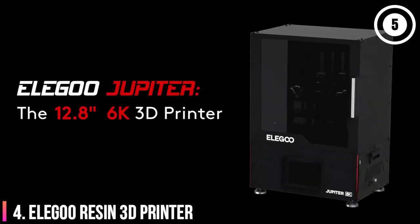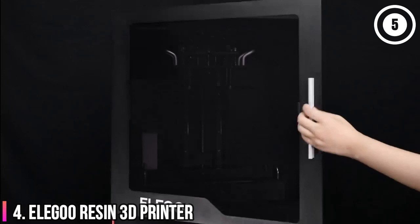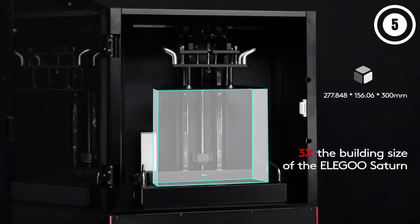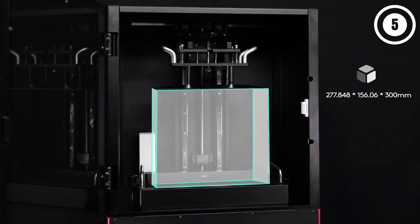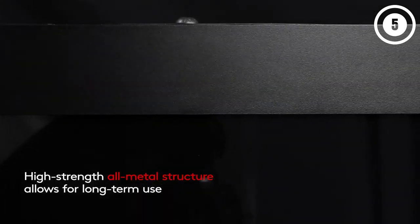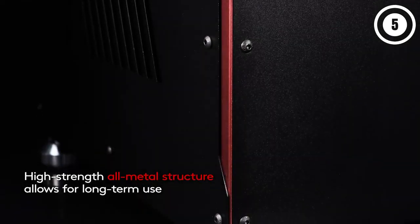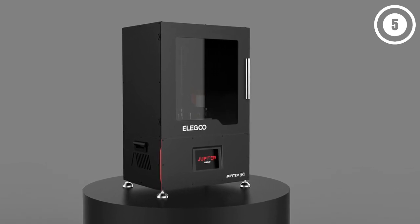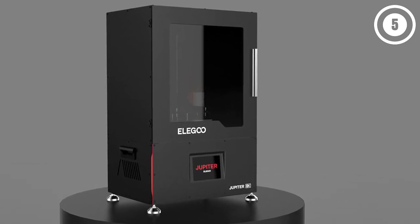Elegoo Jupiter Resin 3D Printer, Best super-large format resin 3D printer. It's only available for pre-order right now, but when it's available, Elegoo's Jupiter printer will offer a combination of great quality and a huge build volume. And, despite its $1,300 price,